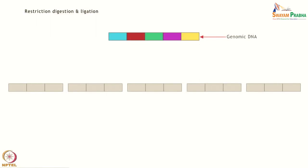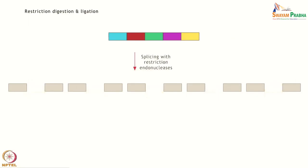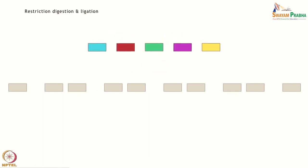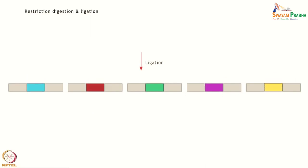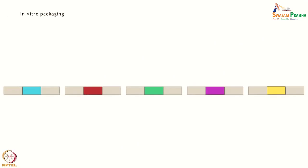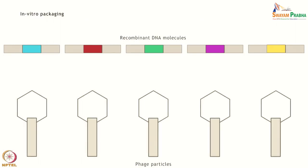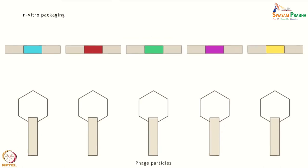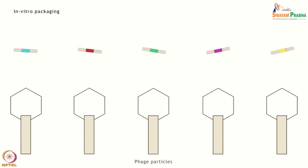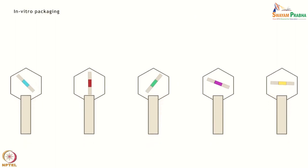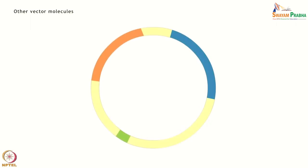Genomic DNA and the vector molecule are cleaved with the same restriction enzyme to generate complementary end sequences. These are then ligated using DNA ligase to generate recombinant DNA molecules. These recombinant molecules can be packaged in vitro into suitable phage particles which serve as useful vectors to carry foreign DNA molecules. Lambda and M13 are two of the most commonly used phage particles for this purpose. DNA inserts up to 10 kilobases can be inserted into these phage particles.